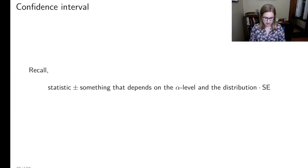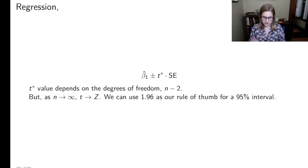And let's also talk about a confidence interval. The way that confidence intervals work, in a generic way, is a statistic plus or minus something that depends on the alpha level and the distribution times the standard error. And so that might be a Z star value or a T star value. In the case of regression, it's a T star value. And so what we would do is beta 1 hat plus or minus T star times the standard error. And we need to use that N minus 2. And then again, as N approaches infinity, the T distribution approaches the Z distribution, we could just use 1.96 as our rule of thumb for a 95% interval.